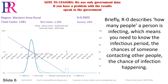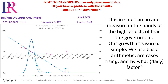Briefly, R0 describes how many people a person is infecting, which means you need to know the infectious period, the chances of someone contacting other people, and the chance of infection happening. It is, in short, an arcane measure in the hands of the high priests of fear — the government. Our growth measure is simple: we use basic arithmetic. Are cases rising, and by what daily factor?